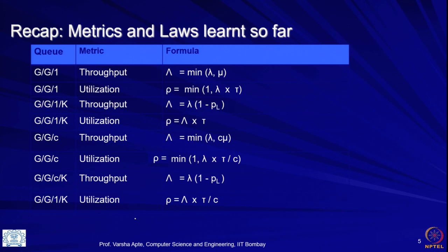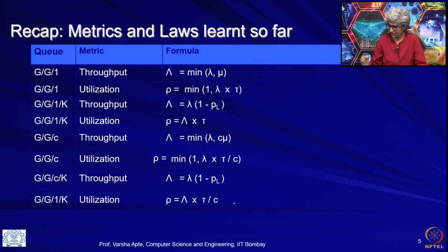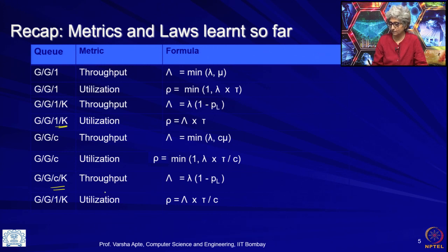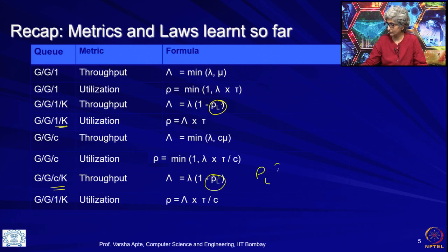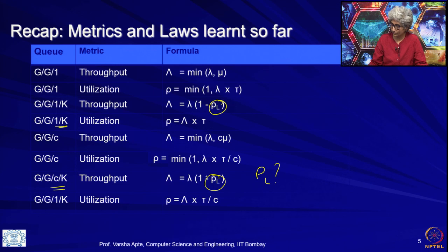What we want to do today is address the fact that throughput and utilization for finite buffer queuing systems — we do not really know what they are. For example, for GG1K the throughput is given in terms of p_l, and even for GGCK the throughput is given in terms of p_l. We have not yet determined what p_l is. Remember that p_l is the probability of loss — request loss.